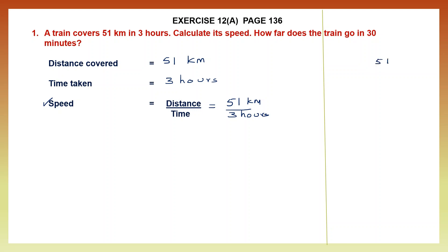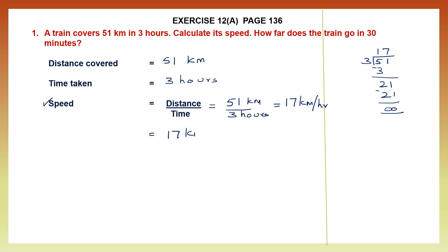So let's divide 51 by 3. 3 ones are 3, minus, then we have 2. We bring down 1, my number is 21. 3 sevens are 21, minus. So we've got 17. So the speed is 17 kilometers per hour. This is how we write speed — 17 kilometers, the unit is kilometers per hour.